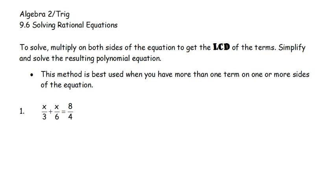The first method is used when we have more than one fraction on one or both sides of the equation. We're going to multiply both sides by the LCD — the least common denominator of the terms. This is just like when we are adding fractions. Then we simplify and solve the resulting polynomial equation. This method is best used when you have one or more terms on one or more sides.